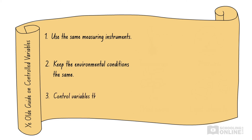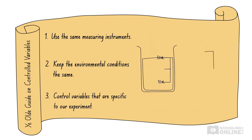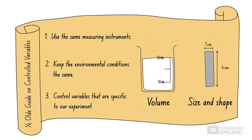Often, we need to control variables that are specific to our experiment — like how archers are required to stand 20 metres from the target. In our experiment, we kept the volume of hydrochloric acid and the dimensions of the zinc strip constant. If we increased the volume of hydrochloric acid, the volume of hydrogen gas produced in 10 seconds might have increased. Similarly, if we increased the size or changed the shape of the zinc strip, the reaction rate might have increased. So to achieve valid results for the rate of reaction, we needed to keep both of these variables constant.